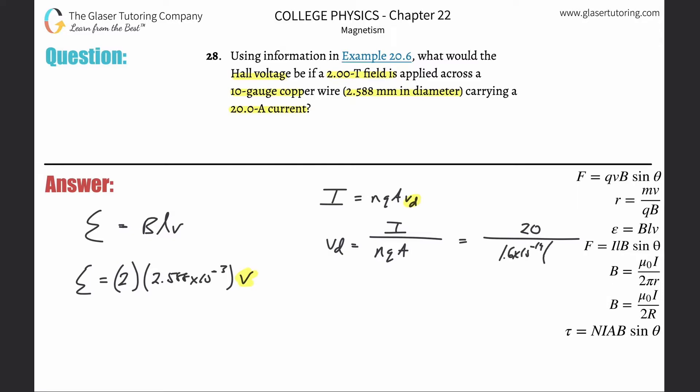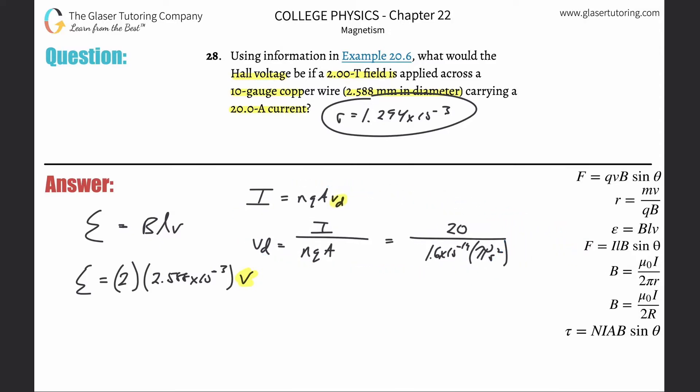Cross-sectional area is relatively easy. This is 20 over 1.6 times 10 to the minus 19th. Cross-sectional area - remember this is a wire so it's π r squared. They didn't give you a radius, they gave you diameter, so the radius would just be half of that. Take 2.588 over 2, so that'd be 1.294 times 10 to the minus 3 meters.